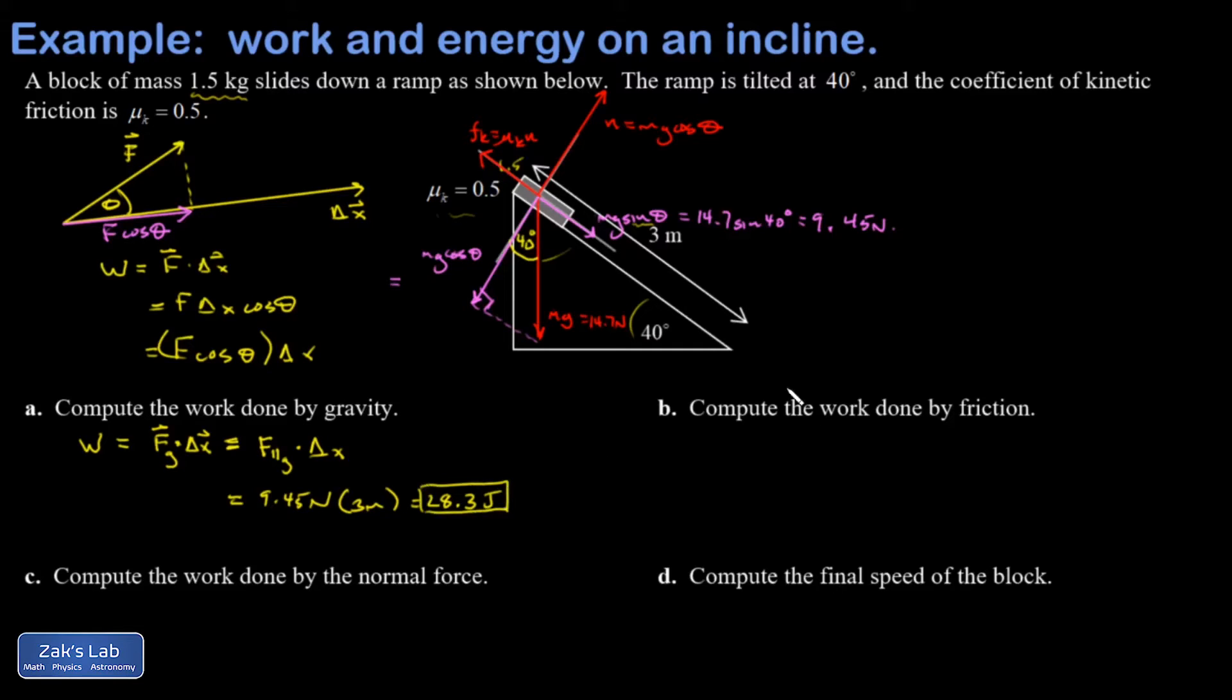Next, compute the work done by friction. So I've got to get the size of that friction force. That's mu k times the normal force. That's 0.5 times the normal force, which is mg. That's 14.7 times the cosine of 40 degrees. I'll go ahead and put it over here.